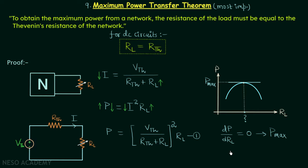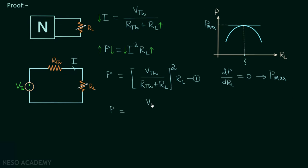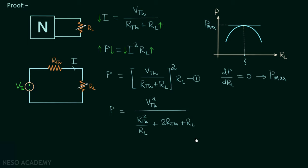To find the maximum power and the corresponding value of RL, we differentiate P with respect to RL and equate the result to 0. We can rewrite equation 1 as P equal to VTH squared divided by (RTH squared over RL plus 2·RTH plus RL). We have two options: differentiate P directly, or differentiate the denominator and equate to 0. Both give the same result, because when P is maximum, the denominator is minimum, and at a minimum the tangent also has zero slope. So we differentiate the denominator.